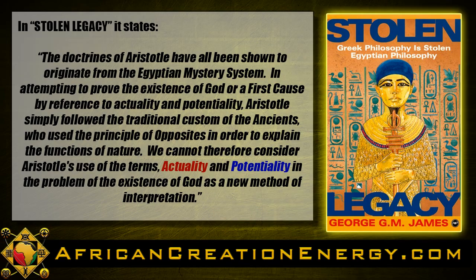In the book Stolen Legacy, Dr. George G.M. James states that the doctrines of Aristotle have all been shown to originate from the Egyptian mystery system. In attempting to prove the existence of God or a first cause by reference to actuality and potentiality, Aristotle simply followed the traditional custom of the ancients, who used the principles of opposites in order to explain the functions of nature. We cannot, therefore, consider Aristotle's use of the terms actuality and potentiality in the problem of the existence of God as a new method of interpretation.